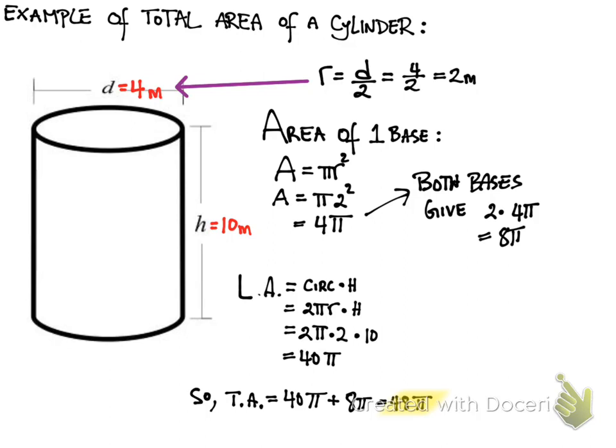The total area is the lateral area, 40 pi, plus the area of the bases, 8 pi. So altogether, that's 48 pi.